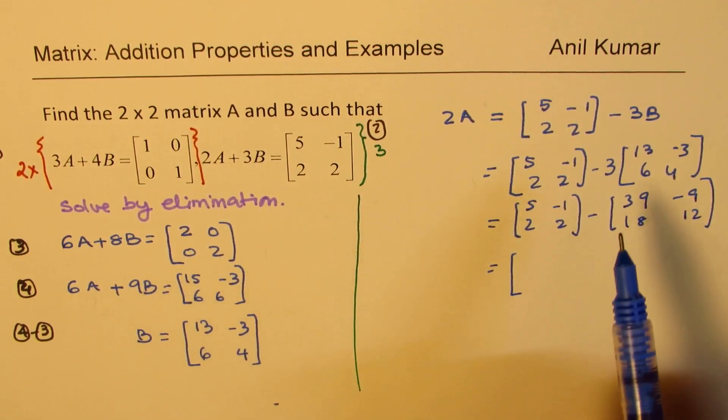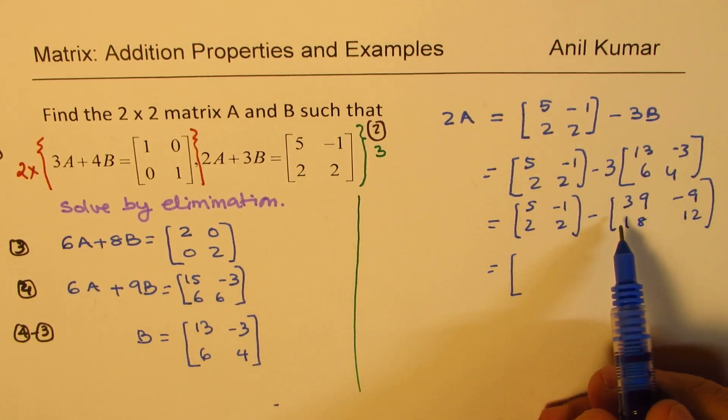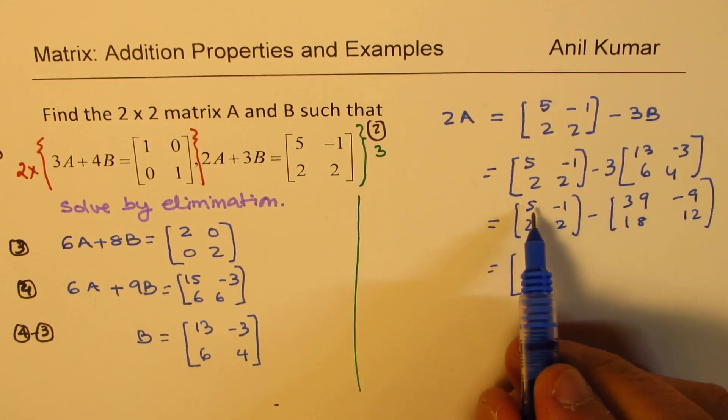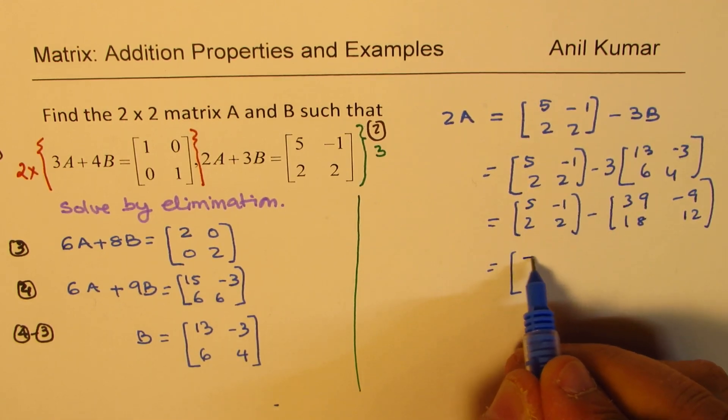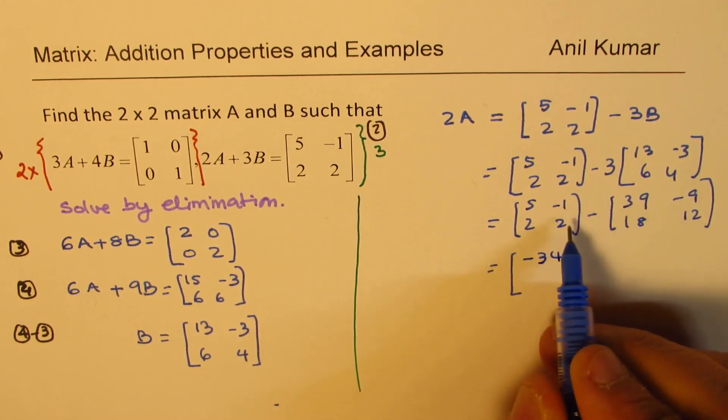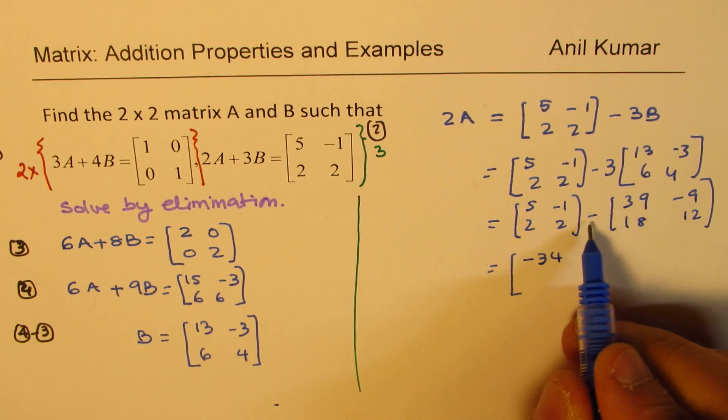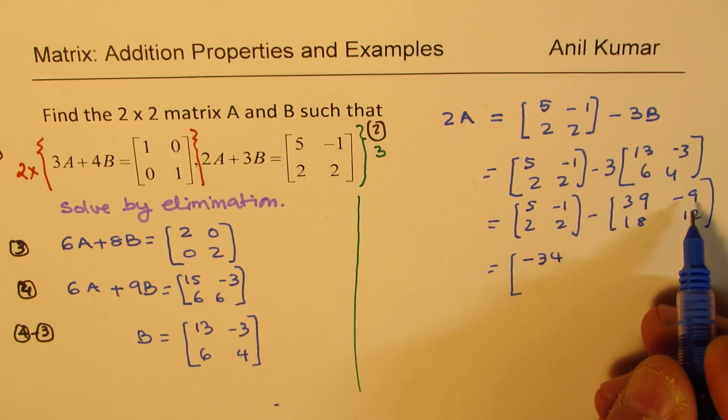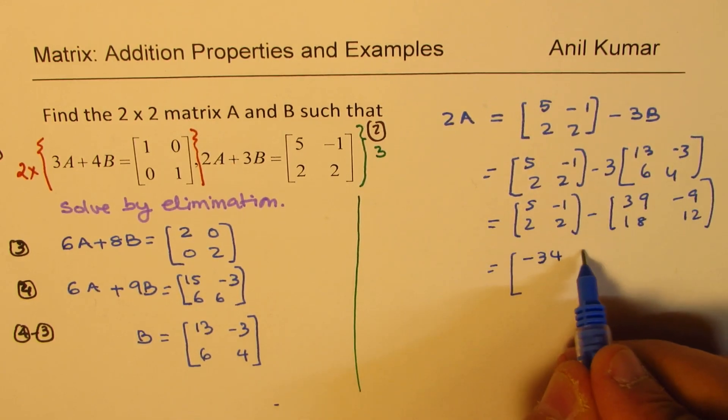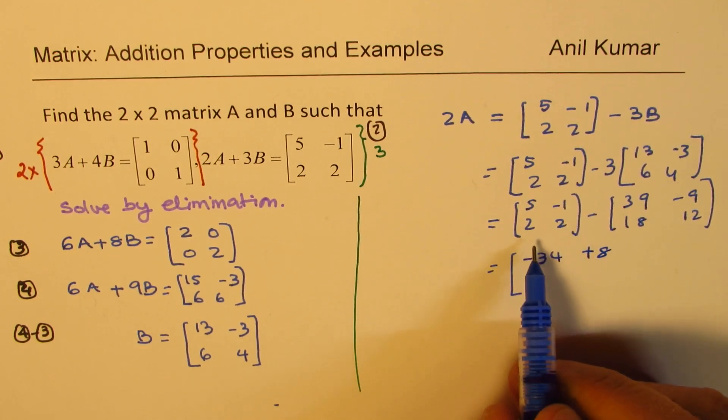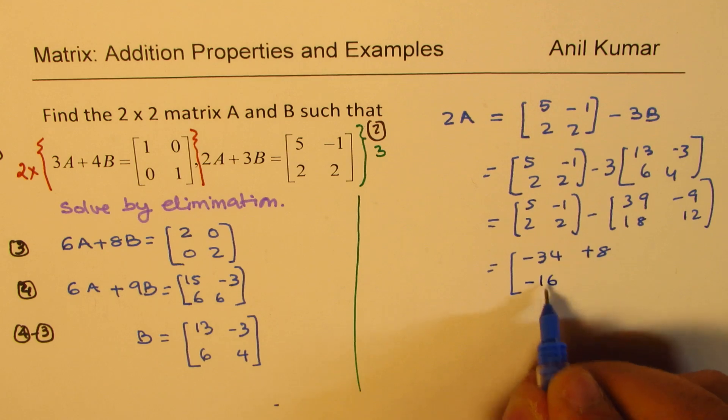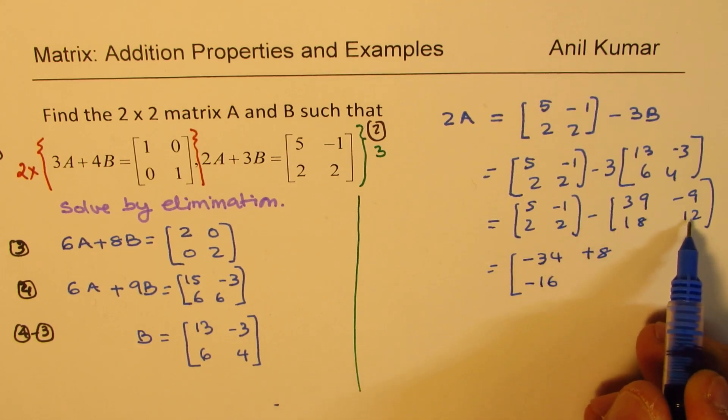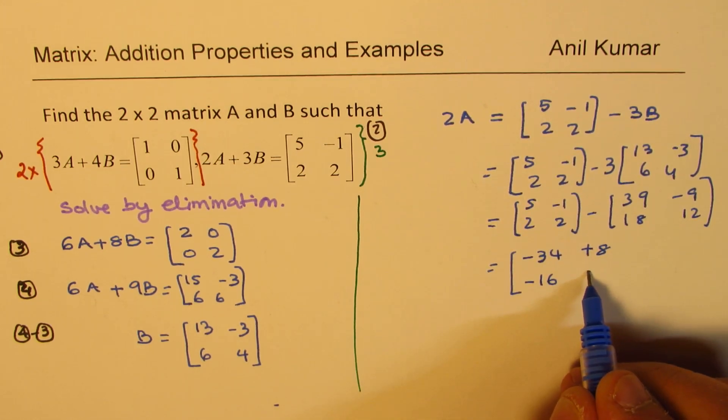And that gives us, when you subtract, you get negative 34 from the first element. You have to do the corresponding elements. The second element becomes 8. And we get 2 minus 18 which is minus 16, and 2 minus 12 which is minus 10.